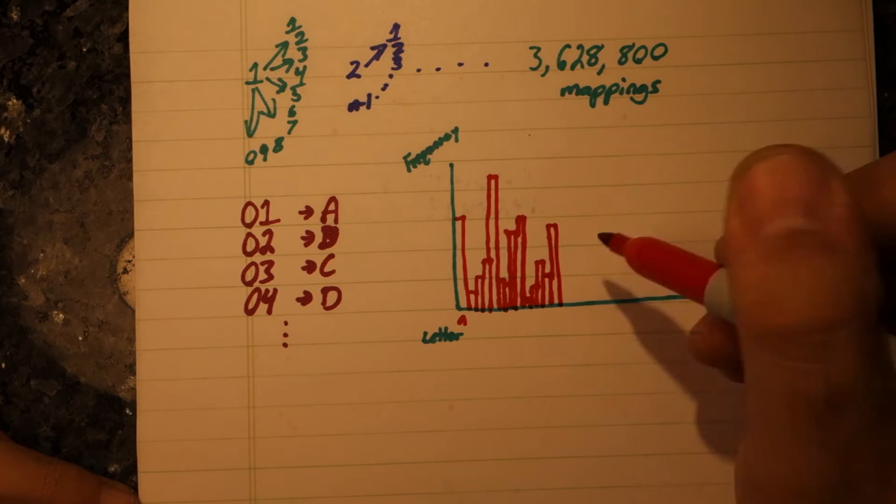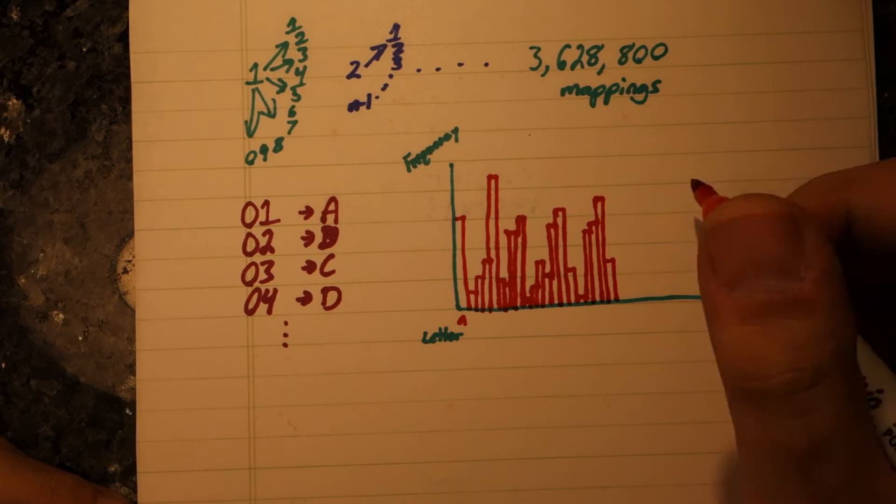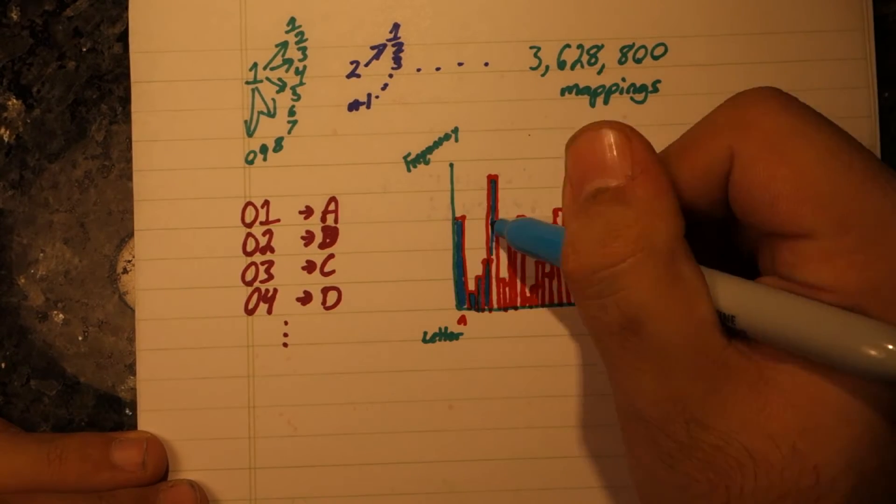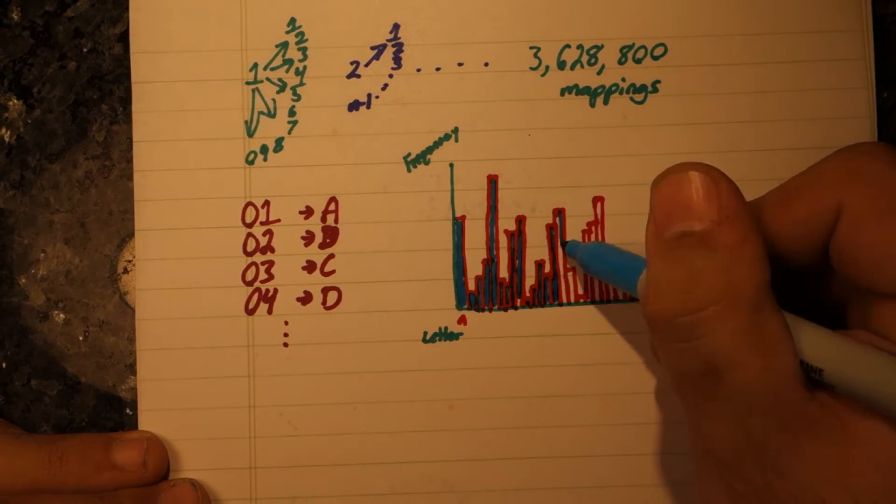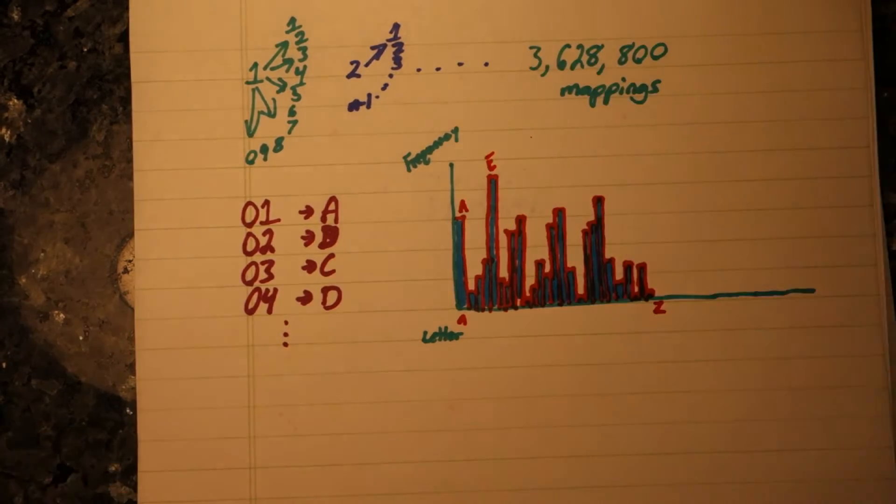So given enough encrypted number strings using the same mapping, we can analyze those numbers statistically and start making very educated guesses. From those guesses, we can then derive the mapping that we used as a key.